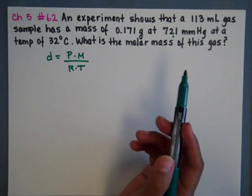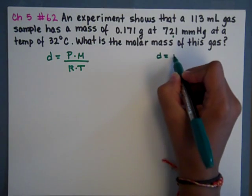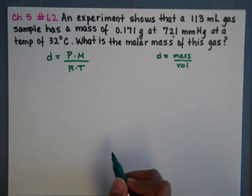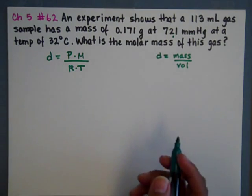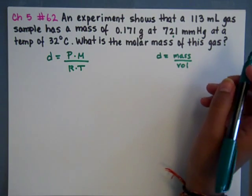So how are we going to find the density? Density equals mass over volume. That's always the standard definition for density. In this problem we have a mass and we have a volume, so we can calculate our own density. We don't have to be given a density.